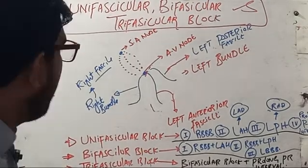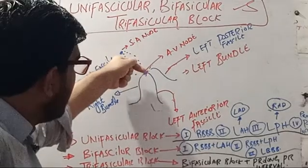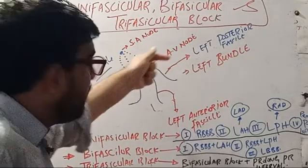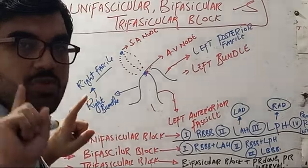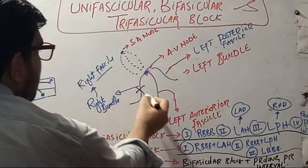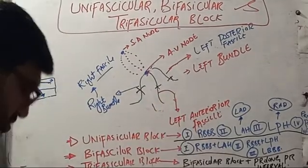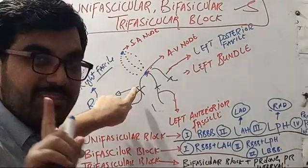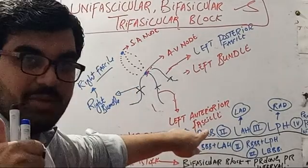So actually we are having three branches. Fascicle means branch. Right bundle is one fascicle, left anterior bundle is another fascicle, and left posterior bundle is our left posterior fascicle. By unifascicular block, we mean either this one is blocked, or this one is blocked — one fascicle is blocked. So either right bundle branch block is unifascicular block.